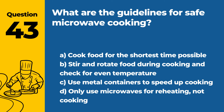Question 43. What are the guidelines for safe microwave cooking? a. Cook food for the shortest time possible. b. Stir and rotate food during cooking, and check for even temperature. c. Use metal containers to speed up cooking. d. Only use microwaves for reheating, not cooking. Answer b. Stir and rotate food during cooking, and check for even temperature. Safe microwave cooking involves stirring and rotating food during cooking, and checking for an even temperature distribution to ensure food is cooked thoroughly.